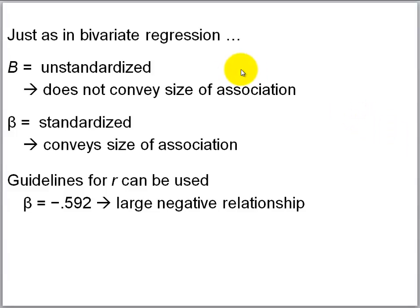To summarize: b's are unstandardized coefficients that do not convey size of association. Betas are standardized coefficients analogous to r in the bivariate situation, and they do convey size of association. Guidelines for r can be used to interpret size of association as conveyed by the betas. For example, the beta of minus 0.592 for behavior problem score conveys a very strong negative relationship between behavior problem score and parent-child relationship score.